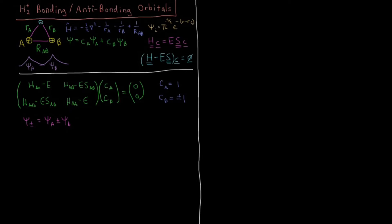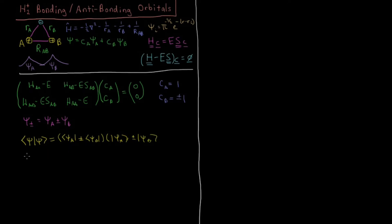We need to make sure this expression is normalized, so we look at the integral of ψ*ψ, which should equal 1. If not, we choose an appropriate normalization constant to make it 1. Expanding in terms of ψA and ψB, we have in the bra ψA ± ψB and in the ket ψA ± ψB, giving four individual terms: ψ*A·ψA, ±ψA·ψB, ±ψB·ψA.